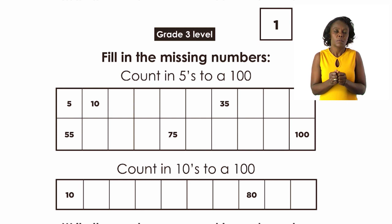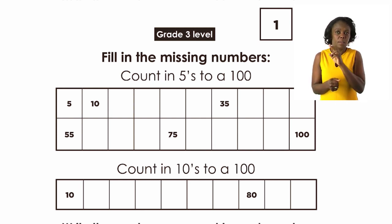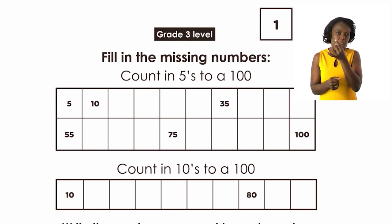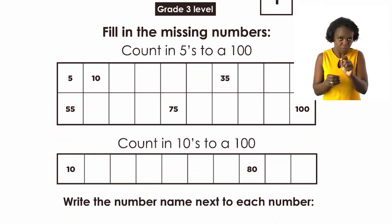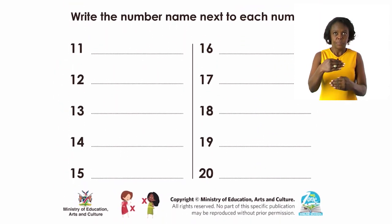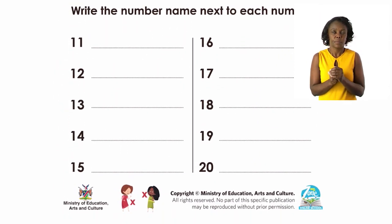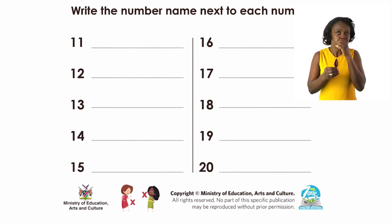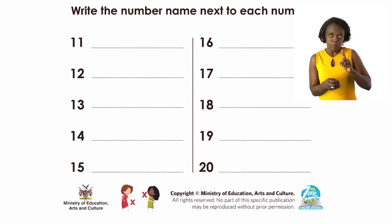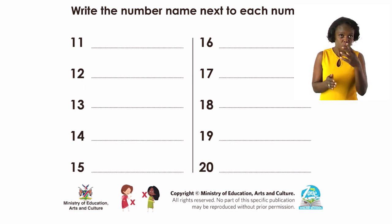I hope you still remember how to count in 10. How do we count in 10? 10, 20, 30, 40, 50, 60, 70, 80, 90, 100. There you got it! So please just fill in the numbers there. And under there there is a challenging one — you are not going to get these numbers written anywhere, but I know for sure that you still remember how to write the number names. So we are going to write the number names from number 11 up to 20. Please try and write them in the lines.